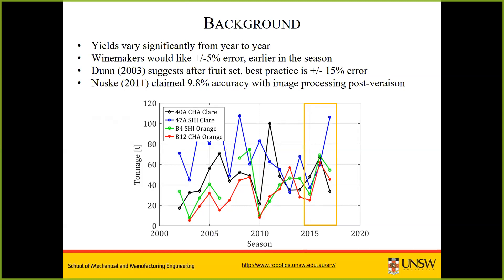Since then, a substantial amount of work by Steve Nusky's group in the US at Carnegie Mellon University has developed algorithms for counting bunches and berries in vines. They claim to be able to estimate yield to within 9.8% accuracy using image processing. We'll see how that stacks up against results in the Australian industry.